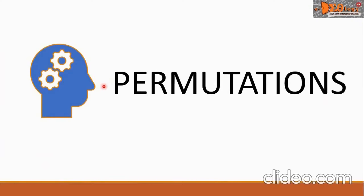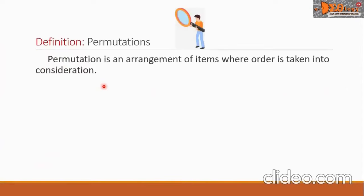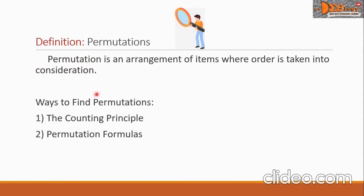Hi everyone! Today we're going to study permutations. Permutation is an arrangement of items where order is taken into consideration. There are two ways to find permutations: number one, the counting principle, and number two, permutation formulas.